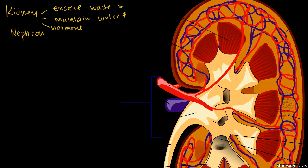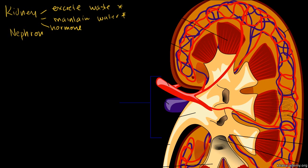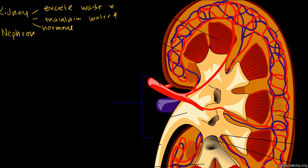This is a zoomed-in, sliced view of a kidney so we can see what's going on inside. The outer area is called the renal cortex — whenever you hear 'renal anything,' that refers to the kidney. The inner area is called the renal medulla; 'medulla' comes from 'middle,' so you can view it as the middle of the kidney.